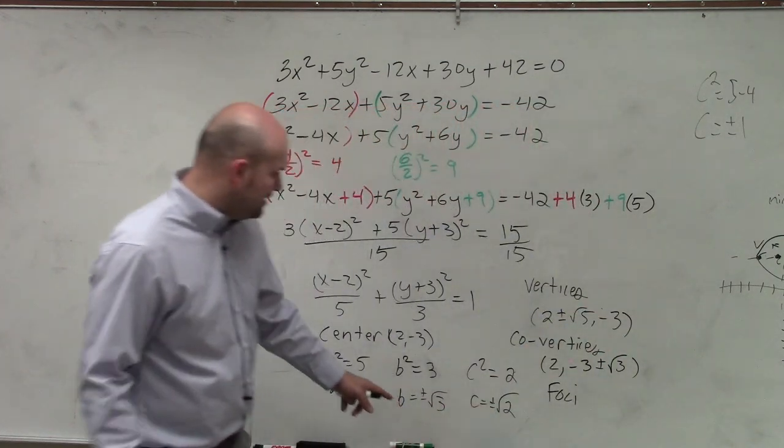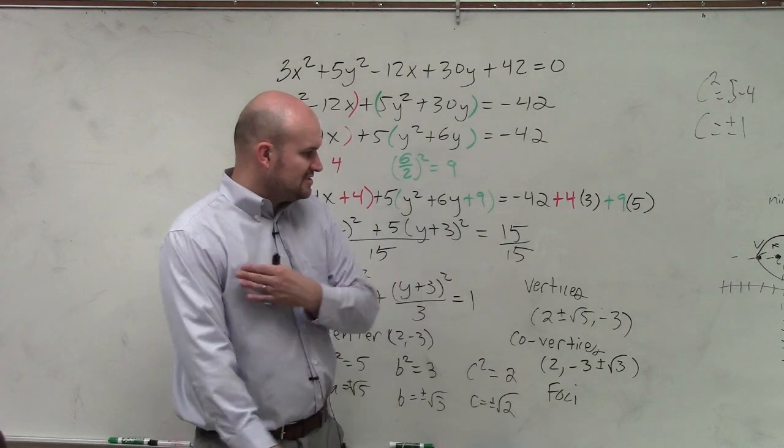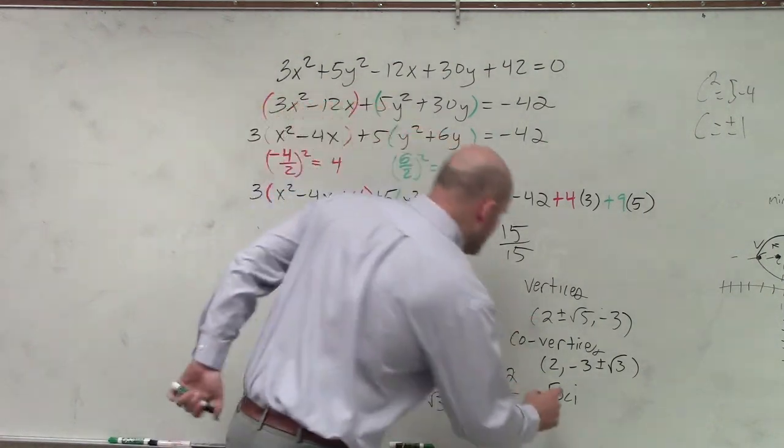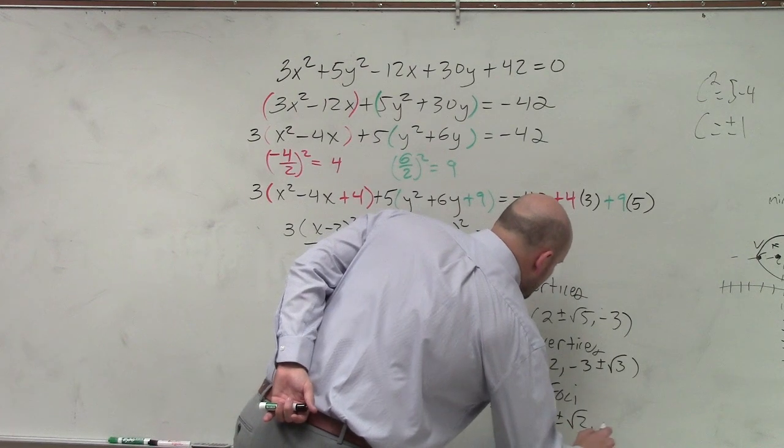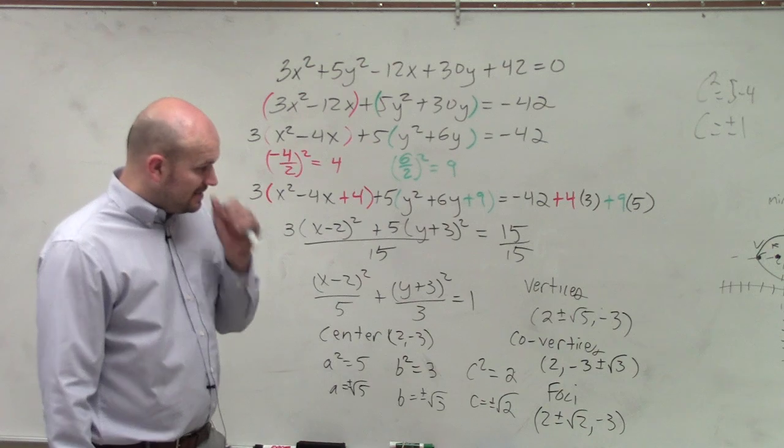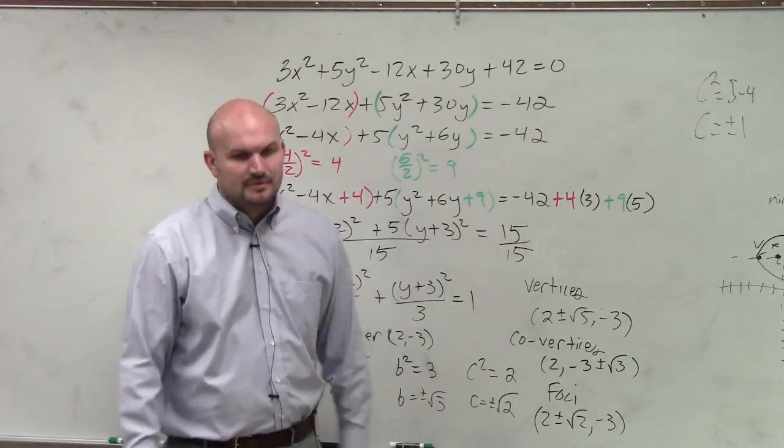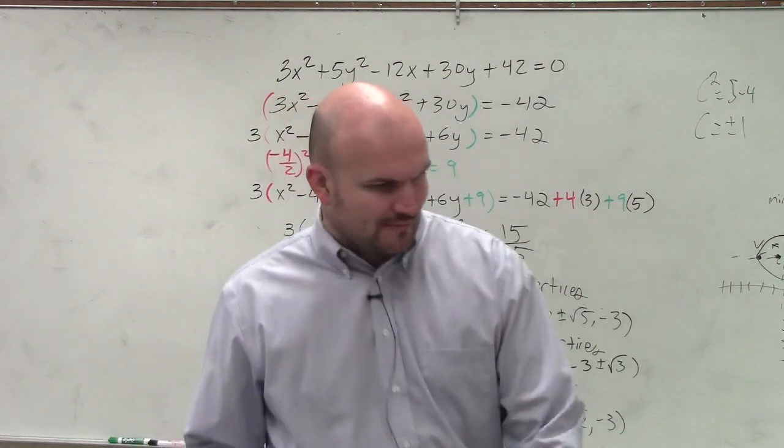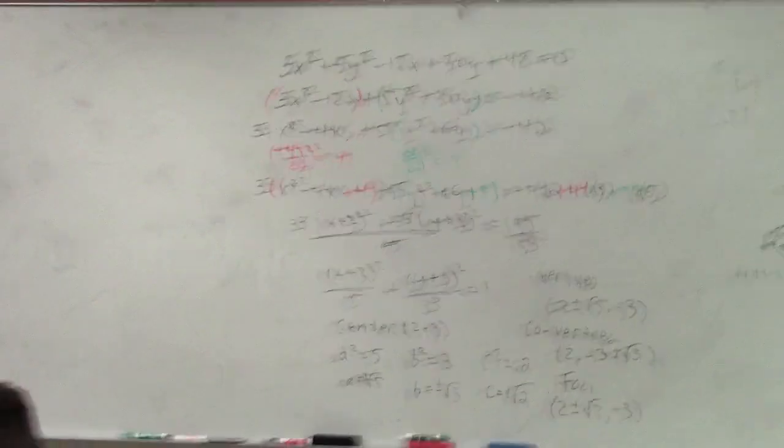And then last but not least, my foci is going to be, again, my foci is along my major axis, which is horizontal. So I'm going to do it just like my vertices. So it's 2 plus or minus the square root of 2, -3. And I didn't sketch my graph, but I'm kind of running out of time. And hopefully you guys would feel comfortable sketching the graph with just estimating would be fine.